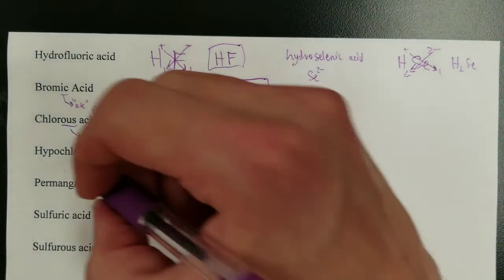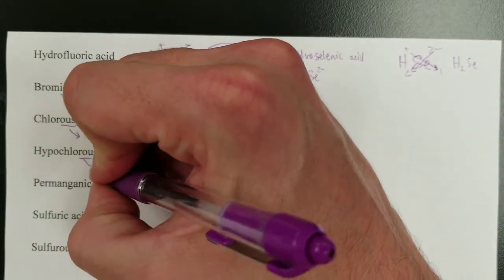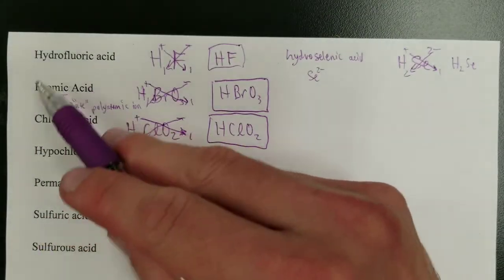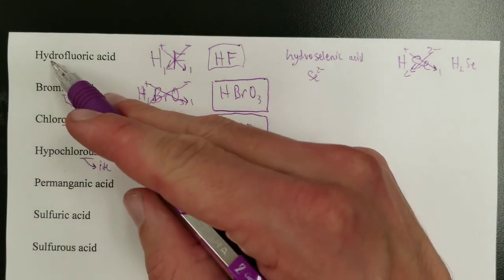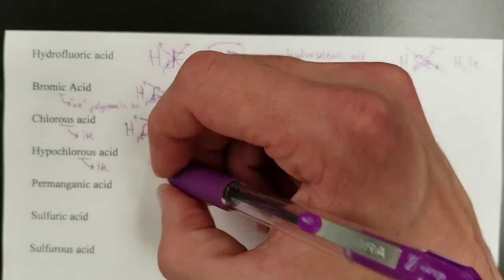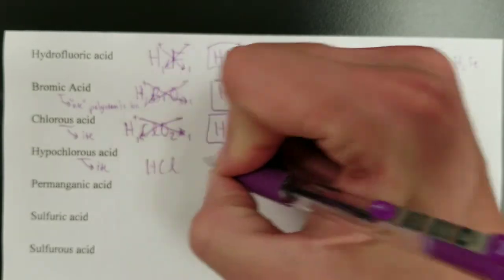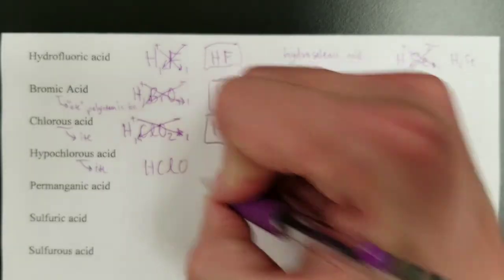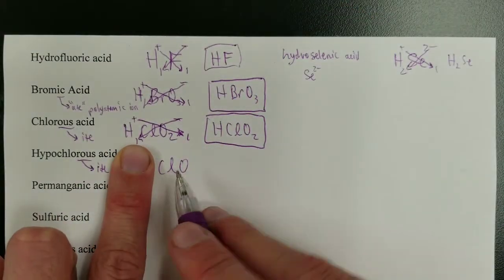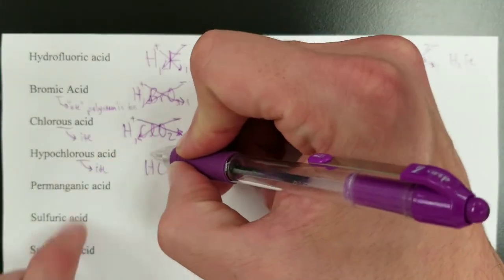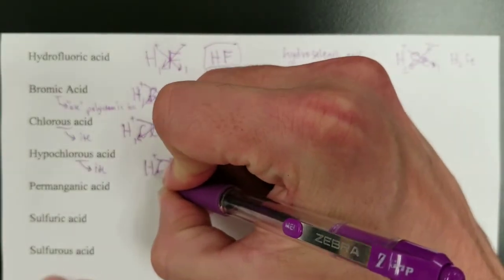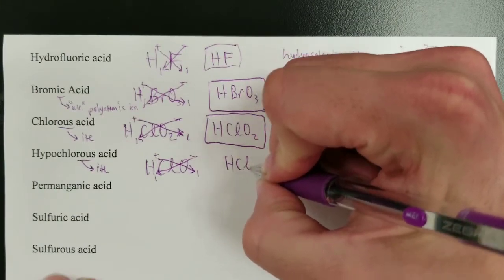Hypochlorous acid — again, '-ous' means '-ite,' so the ion is hypochlorite. Note that 'hypo' is not the same as 'hydro,' so watch those minor differences. Hypochlorite is ClO with a 1-minus charge. One H-plus and one hypochlorite gives the formula HClO.